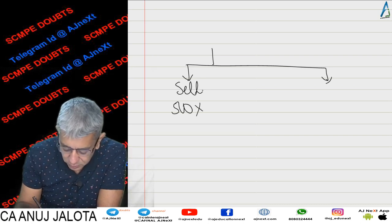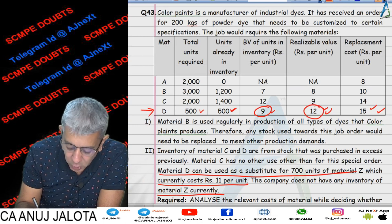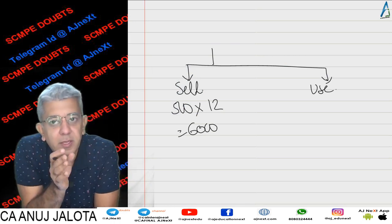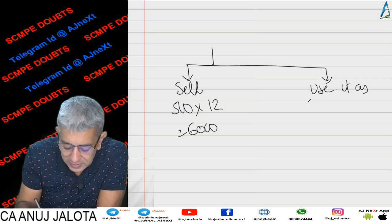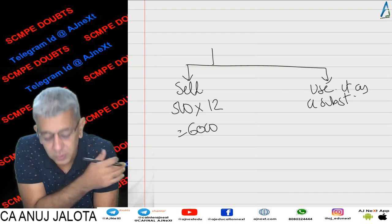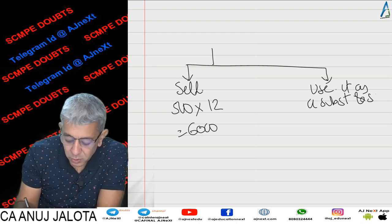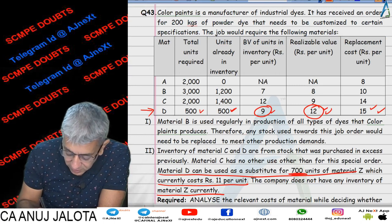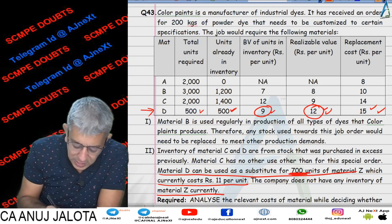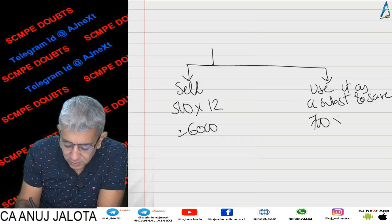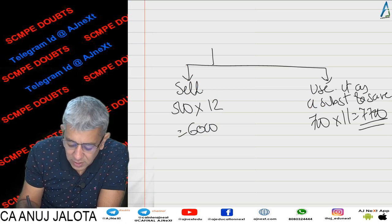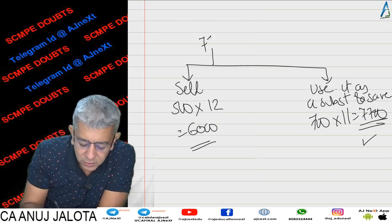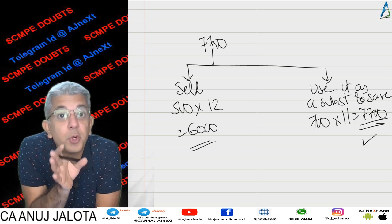If you are going to sell, 500 units in the market at ₹12 — that's the resale value — so you will be getting ₹6,000. But if you don't want to do that, you have one other option: use it as a substitute for Material Z, and then don't purchase Material Z from the market. How much will you save? 700 units at ₹11 = ₹7,700. Obviously we do whatever is better for us — the higher of the two wins — so ₹7,700 is better.